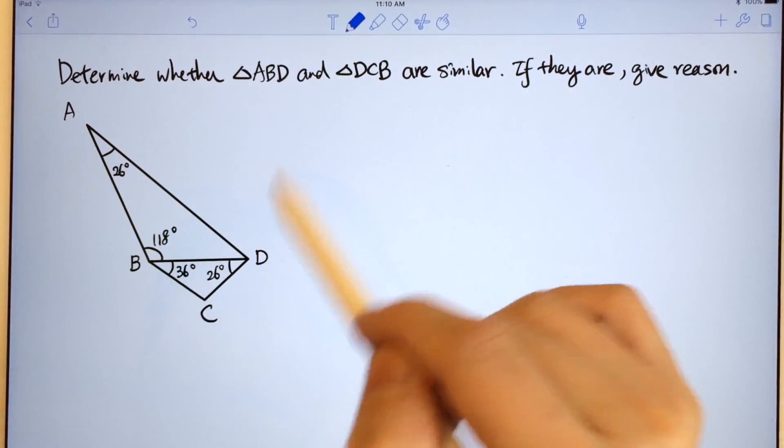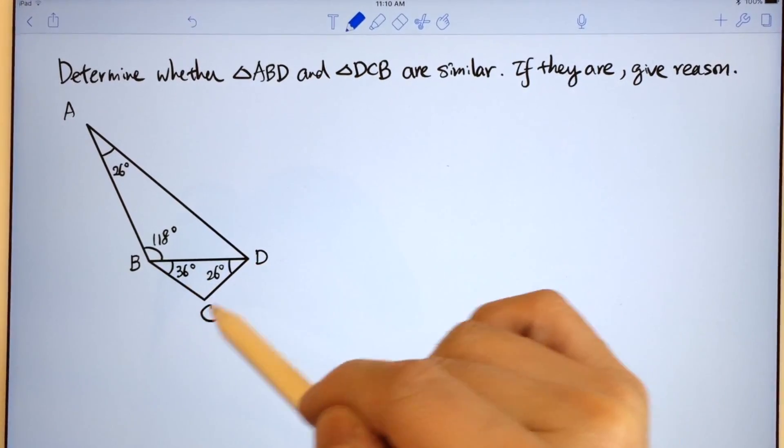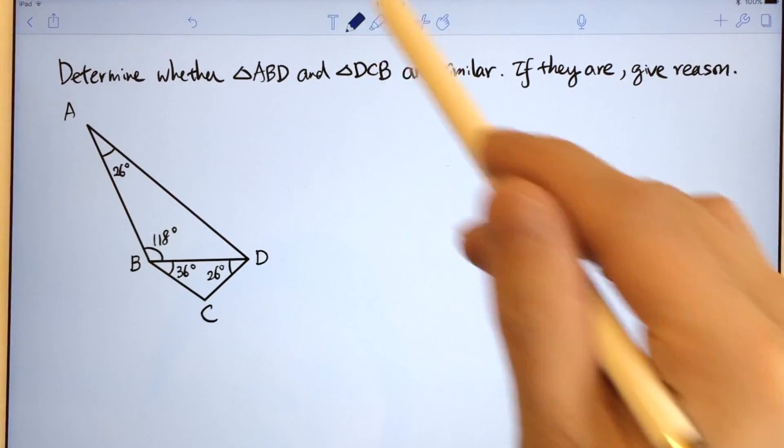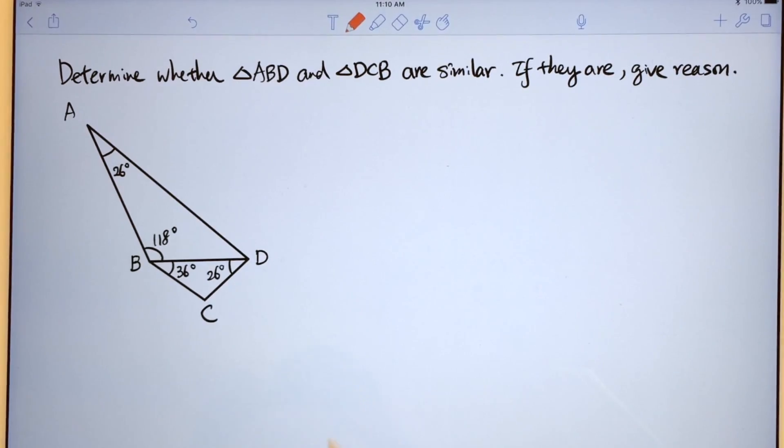Determine whether triangle ABD and triangle DCB are similar. If they are, give reason. First, we can look at the angles of the triangles.